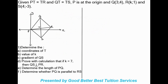Now let's move on to some application for these equations. This example should include every single equation we just went over. Given: PT is equal to TR, and QT is equal to TS. P is at the origin, so the coordinates of P are (0, 0). Q is (3, 4), R is (k, 1) — so we can see we have an unknown value k — and S is (4, -3).